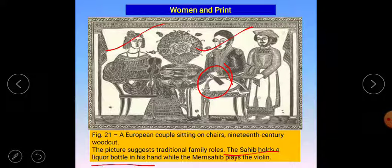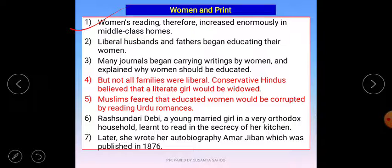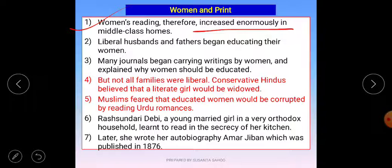Women and print: what type of printing materials did women want to circulate in society? Women who were lagging behind, whose freedom was limited, started writing about themselves. Women's reading therefore increased enormously in middle-class homes. Middle-class families were very interested in reading. Journals began carrying writings that explained why women should be educated.